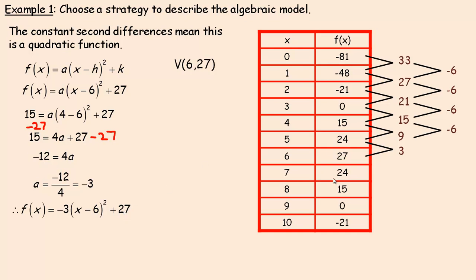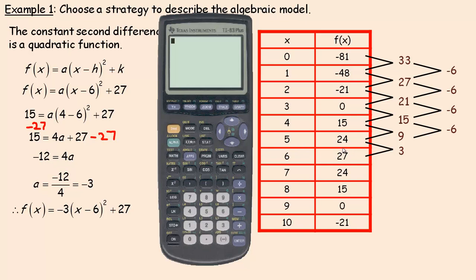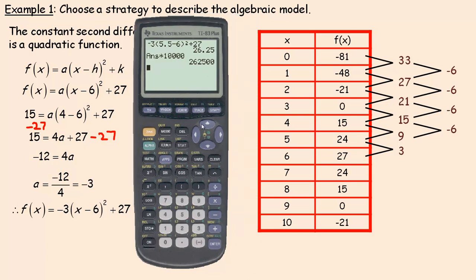For example, if Fred sold 550 hoverboards, we don't have that data but we'd expect the profit to be somewhere between 24 and 27 ten-thousands. We substitute 5.5 (representing 550) into the equation: f(5.5) = -3(5.5 - 6)² + 27 = 26.25. Multiplying by 10,000, if they sell 550 hoverboards the profit would be $262,500.